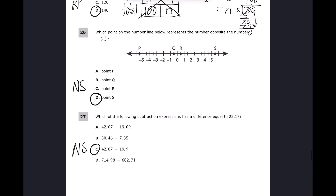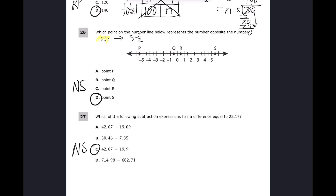For number twenty-six, the opposite of negative five and a half is positive five and a half. Zero is the midpoint, so I'm looking for a positive number. P and Q are negative, so eliminate them. Counting right from zero: one, two, three, four, five and a half — that's point S since six would be the next whole number. The answer is D.